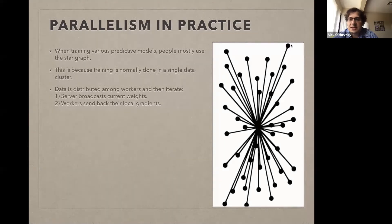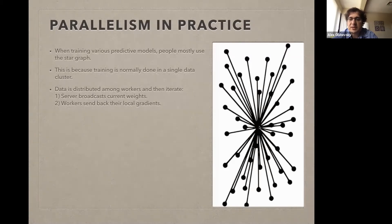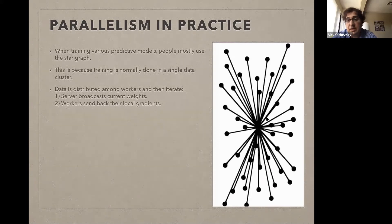If you open up a typical paper which trains a neural network in parallel, what do they do? In practice, 90% of the people use a very simple server-worker architecture. There's a centralized server and a whole bunch of workers, and they typically iterate in rounds. The data is distributed among the various workers. The server sends the current weights; every worker computes how to perturb the data to get slightly better results, sends that back, and the server updates.